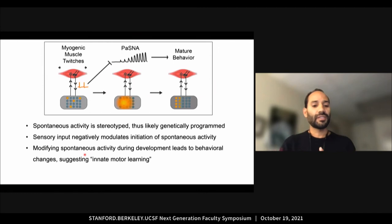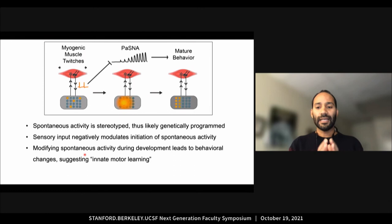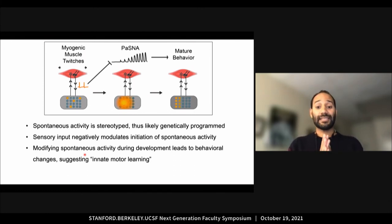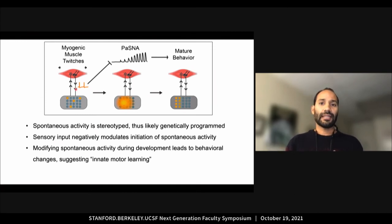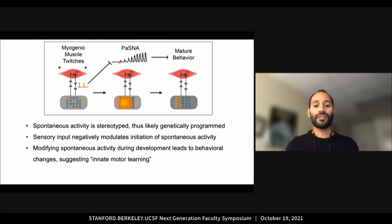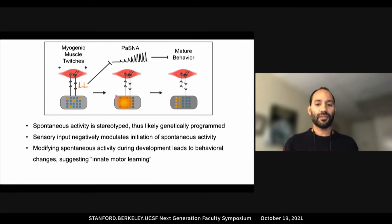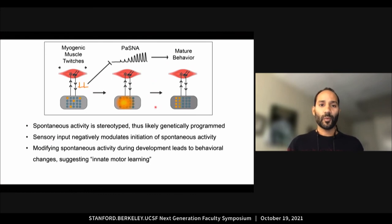Overall, my work shows that spontaneous activity is stereotyped, and thus genetically programmed. This challenges how most people think about activity-dependent mechanisms of circuit wiring. Sensory activity during the myogenic phase dampens initiation of spontaneous activity, revealing a previously unappreciated sensory-to-CNS signaling during the early stages of circuit formation. Lastly, I show that modifying spontaneous activity during development leads to behavioral changes, which suggests a form of innate motor learning.